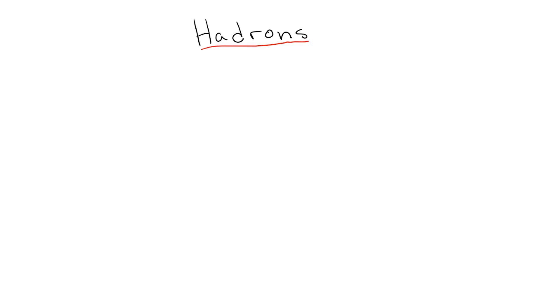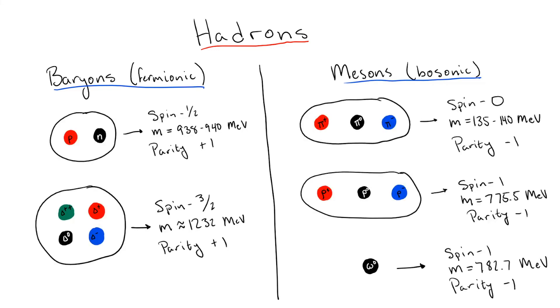These hadrons can be either fermions, known as baryons, or bosons, called mesons. Another thing that was observed about these hadrons is that many of them could be grouped together based on their masses as well as other shared properties such as spin and parity, though they may differ in their electric charges.